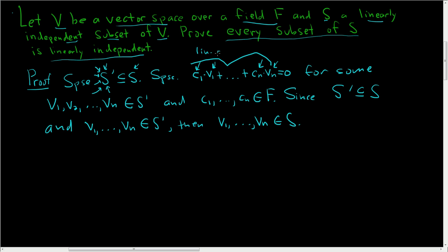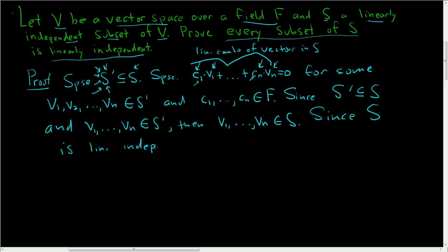This is actually a linear combination of vectors in S, and it's equal to the zero vector. So by definition of linear independence, all of the Cᵢ's are zero. Since S is linearly independent, C₁ = 0, C₂ = 0, ..., Cₙ = 0. Therefore, S prime is linearly independent.